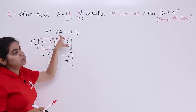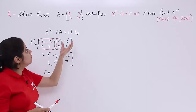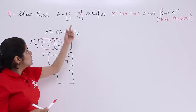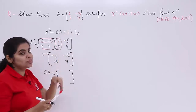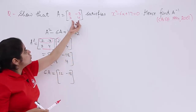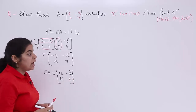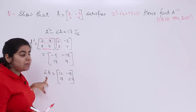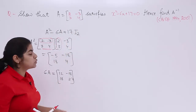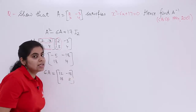Next, find 6A — simply multiply every element of A by 6. So 6A = [12, -18; 18, 24].